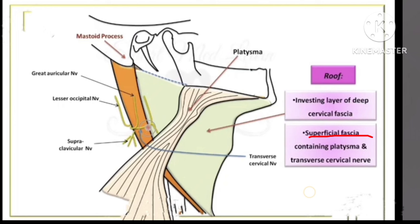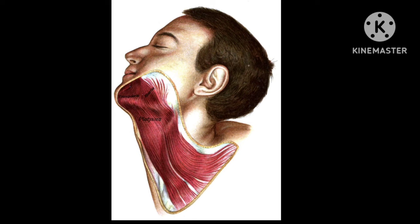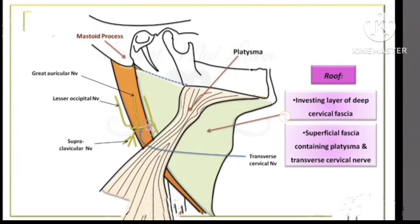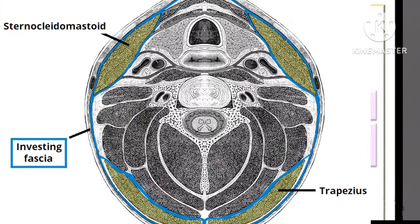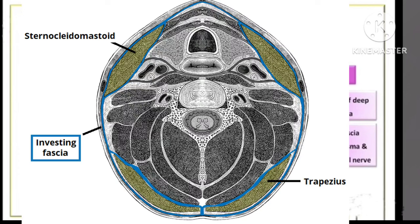The roof is formed by the skin and the superficial fascia. In the superficial fascia, there are two structures: one is the platysma muscle and the other is the transverse cervical nerve. Deep to this is the investing layer of deep cervical fascia, which covers the sternocleidomastoid muscle anteriorly and posteriorly, as well as the trapezius muscle. That is all about the roof.